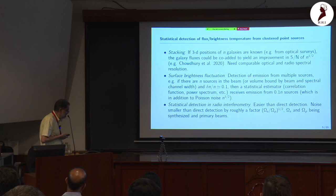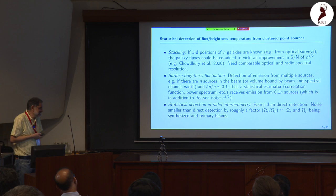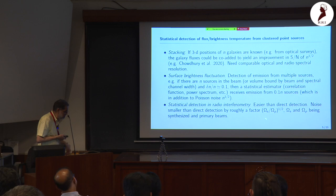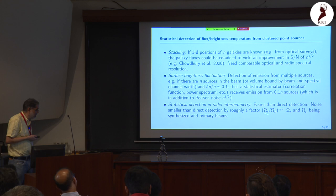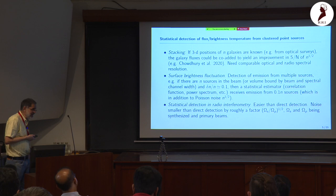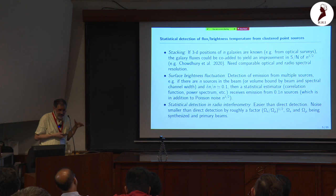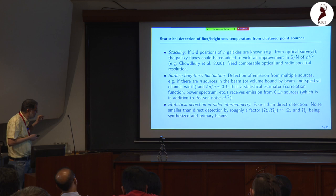The third method involves statistical detection using radio interferometry, which offers an improvement over direct detection by a factor that can be large. So you can achieve lower noise and get flux from multiple sources simultaneously, giving a better chance of detection.